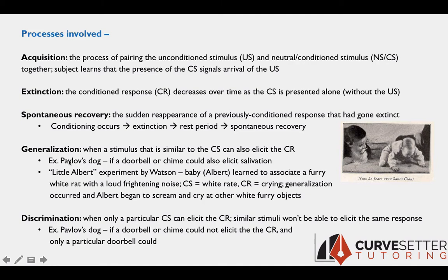Generalization occurs when a stimulus similar to the conditioned stimulus is also able to elicit the conditioned response. With Pavlov's dog, the sound of the bell is the conditioned stimulus eliciting salivation. If generalization occurred, a similar sound — as long as it's similar enough to the bell — could also elicit salivation. For example, a doorbell, a chime, or a strum of a piano key. The animal generalizes the conditioned stimulus to similar things, and those also trigger the conditioned response.